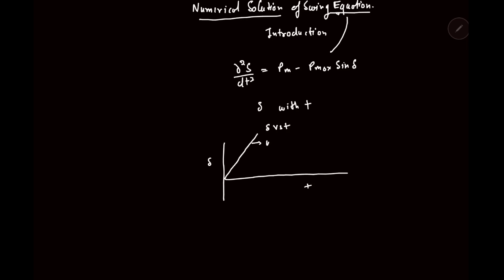So if we have this delta, it continues to increase with time, then we can say what is this system? It is unstable.